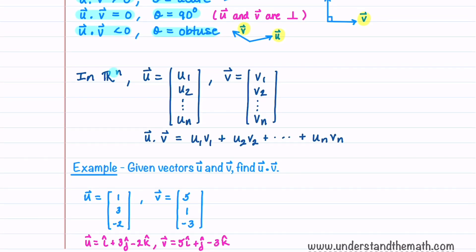In Rn the dot product is computed just like it is in R2, and u dotted with v is equal to u1·v1 plus u2·v2 all the way up to un·vn. Each component of u is just multiplied by the corresponding component in v.